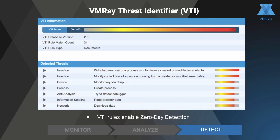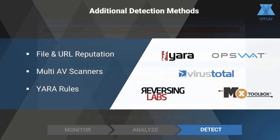By analyzing completely independent of signatures, VMRay Analyzer can detect zero-day malware that otherwise evades detection. Malware may not fully execute if it tries to reach a command and control server that is already down. In circumstances like this, we augment the core dynamic analysis and other detection methods. We incorporate file and URL reputation scoring, as well as support for multi-AV scanners like Opswat and VirusTotal. Additionally, a broad range of YARA rules are included by default for flagging known suspicious behavior and attributes.